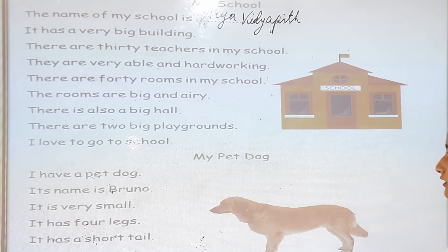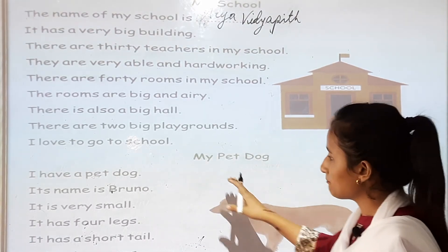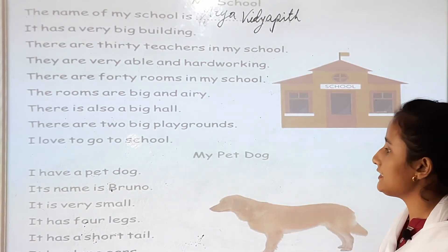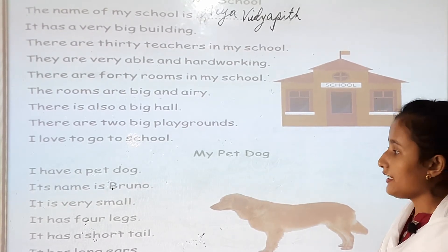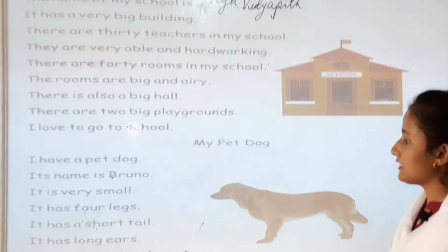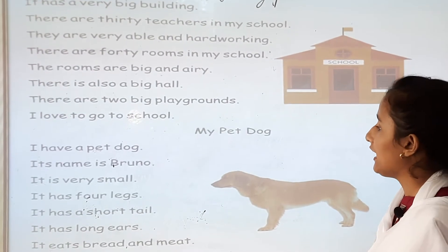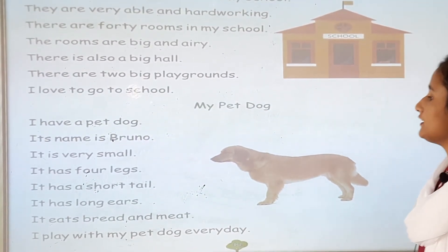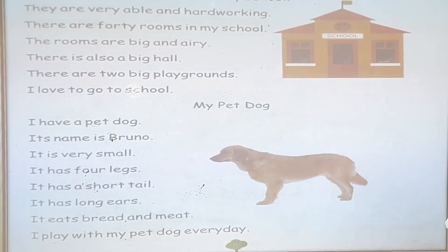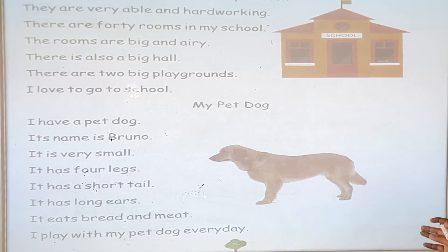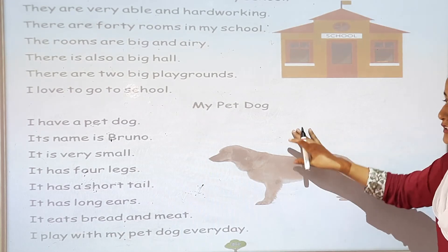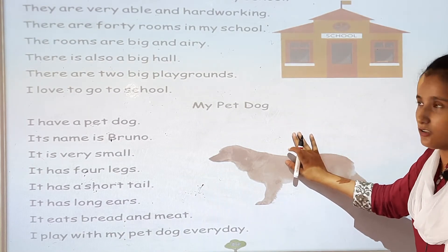Now, my pet dog. I have a pet dog. Its name is Bruno. It is very small. It has four legs. It has a short tail. It has long ears. It eats bread and meat. I play with my pet dog every day. So this is about your pet dog.